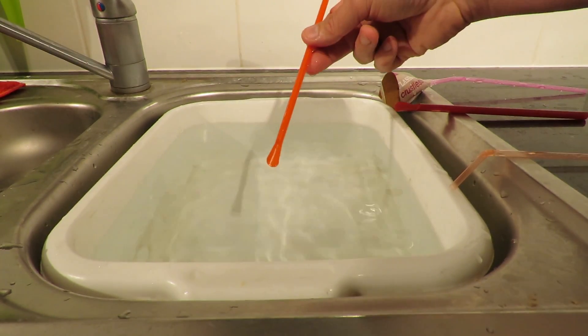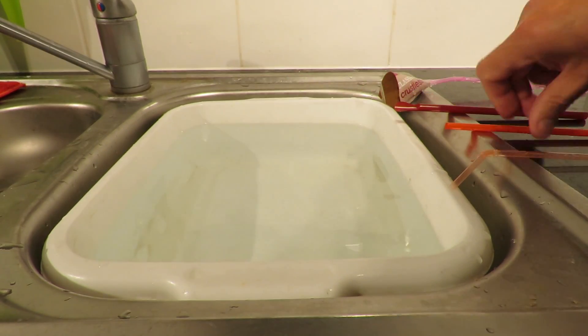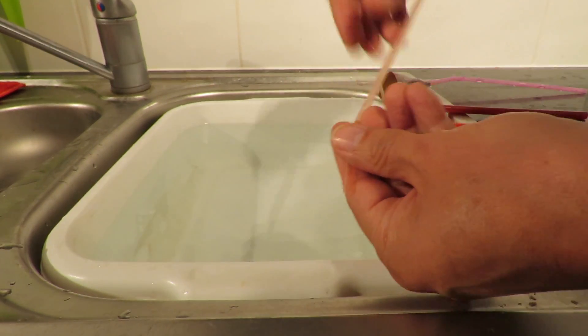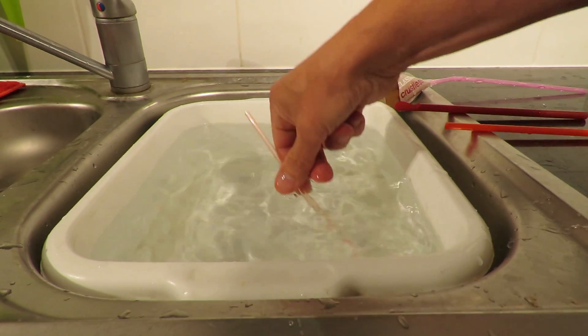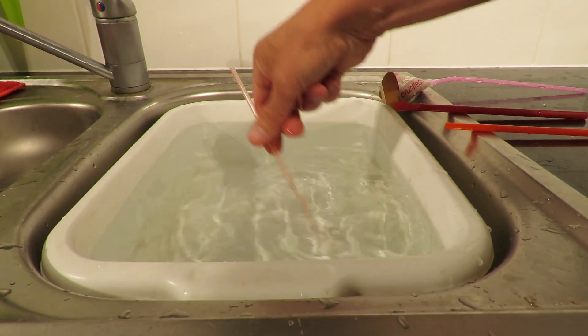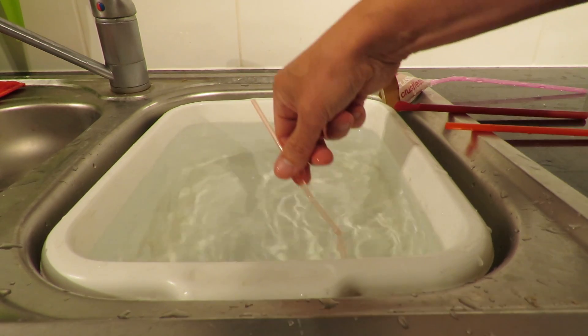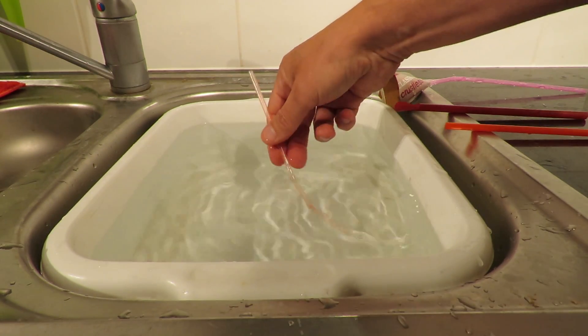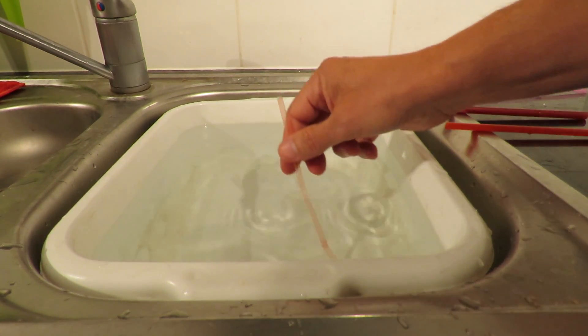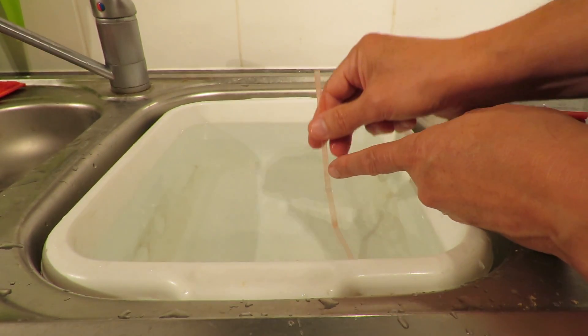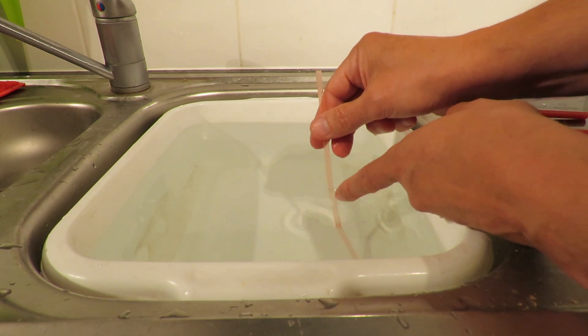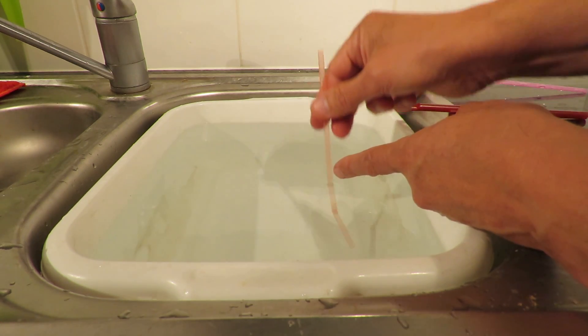So you might say, well, try a smaller straw. So we've got a smaller straw here. There's nothing coming out the top. If you watch the water level, which I don't think the camera will pick up, it is bouncing up and down a little bit as I'm doing that.